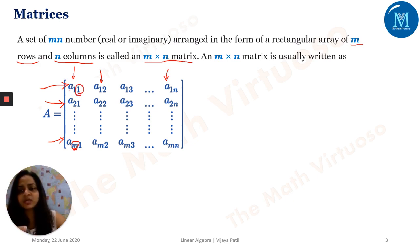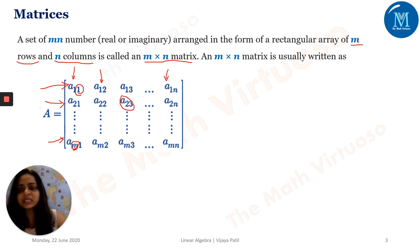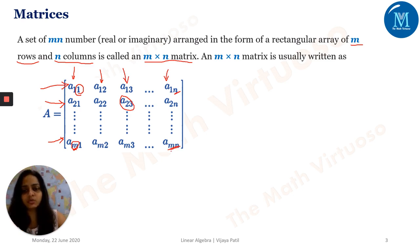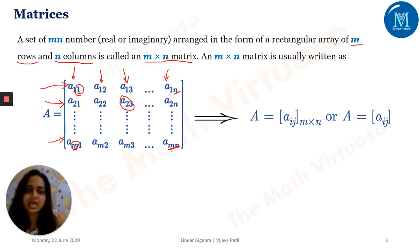If I'm talking about element A₁₁, this element is placed in the first row and the first column. Similarly, element A₂₃ is placed in the second row and the third column. A₁ₙ is placed in the first row and the Nth column, and element Aₘₙ is in the Mth row and Nth column. Mathematically, a matrix is written as A = [aᵢⱼ]ₘ×ₙ.